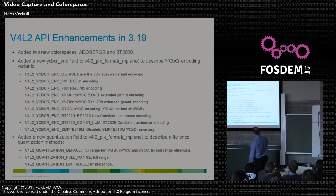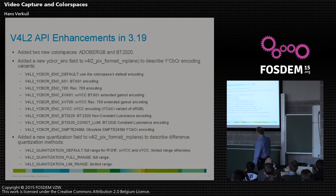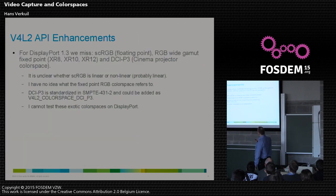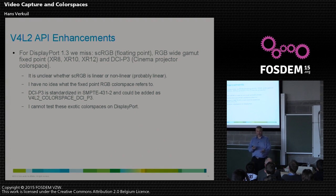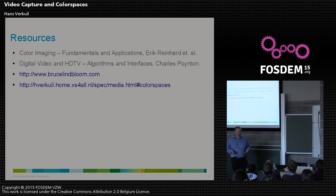The good news is that support for all these color spaces has been added in Linux kernel 3.19. For display, this covers HDMI 2.0 completely as far as I can tell. For DisplayPort, a few spaces are missing — mostly because the DisplayPort standard basically says nothing about it. They say the spaces are there but give no pointers to standards or what they mean. The only one I could figure out was DCI-P3, used in cinemas, which has a proper standard; it could be added but I can't test it, so I've ignored it for now.